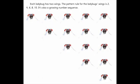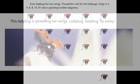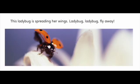Each ladybug has two wings. The pattern rule for the ladybug's wings is 2, 4, 6, 8, 10. It's also a growing number sequence. This ladybug is spreading her wings. Ladybug, ladybug, fly away.